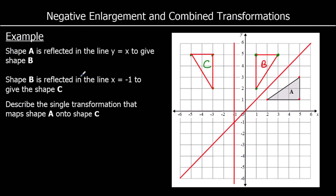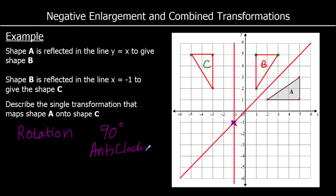Describe the single transformation that maps shape A onto shape C. An important point is where these two lines cross: the two reflection lines intersect at (-1, -1). And so this is going to be a rotation — to go from A to C, it's 90 degrees anticlockwise, and the centre is at (-1, -1). So if we had tracing paper and held it at (-1, -1) and spun it 90 degrees, we'd get to shape C.